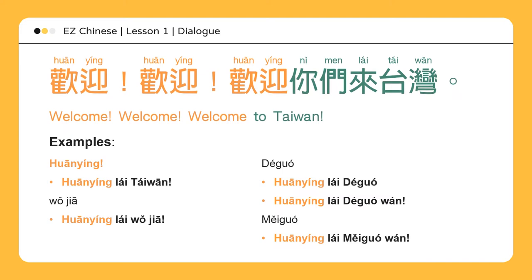The 欢 of 欢迎 means like, happiness, or joy. 迎, together with 欢, means to greet, to receive. When entering a restaurant or convenience store, you will be greeted with 欢迎光临, which literally means "welcome, illustrious guest." You can also use this phrase when someone visits your home, school, or business.